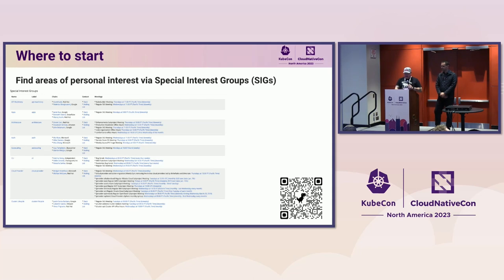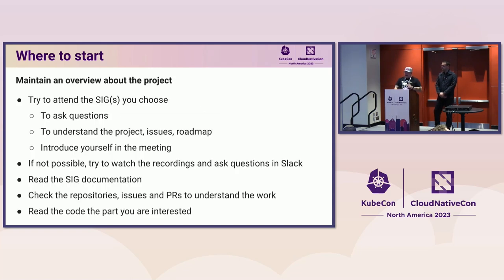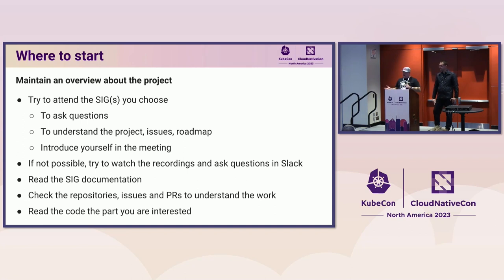In Kubernetes we have several SIGs, and each SIG takes care of different parts of the project. If you scan the QR code you'll see the full list of SIGs. Once you pick a SIG, you should try to attend its meeting. For example with SIG Release, which meets weekly, the first time you just listen, then next time you start asking questions and understanding the issues and roadmap of the project.